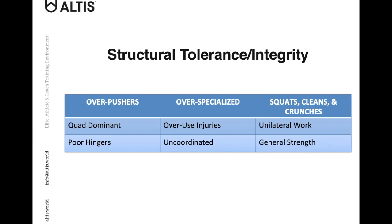The structural tolerance and integrity work with this group really keyed in on them being over-pushers — spending a lot of time on the ground and being very quad-dominant. They were somewhat over-specialized, which created potential for overuse injuries, and similar to the triathlon group, they were a little more on the uncoordinated side of things. They also had a very strong emphasis on squats, cleans, and crunches as staples in their programming, so we tried to offset and balance that with more unilateral work and some general strength work.